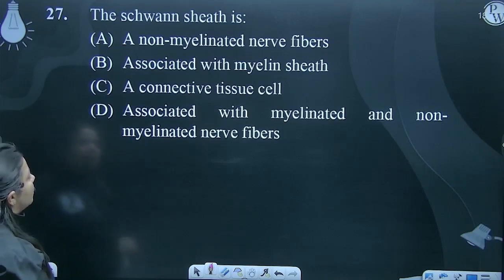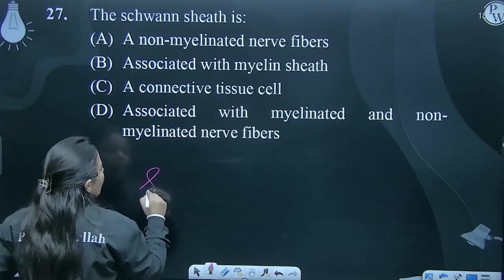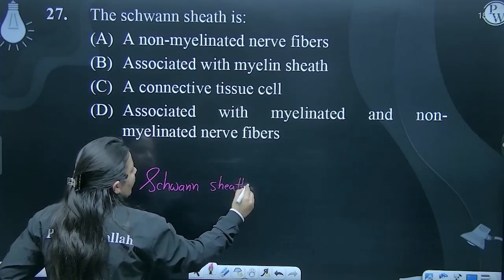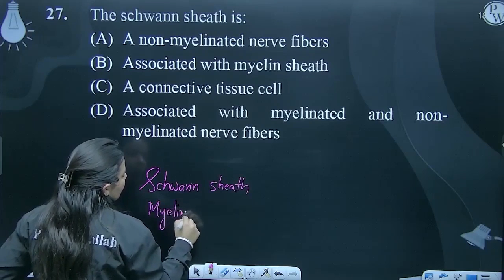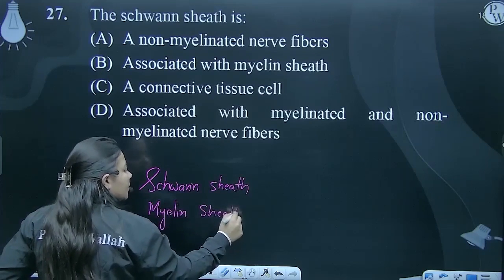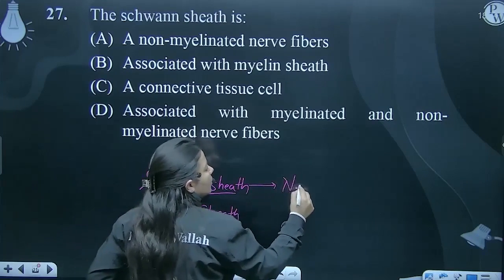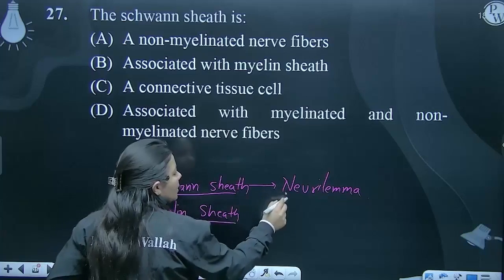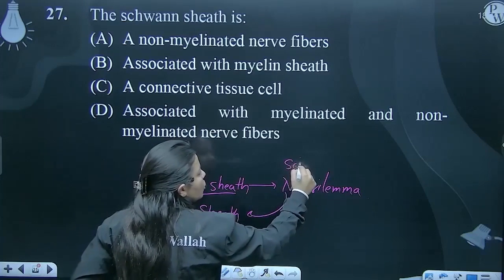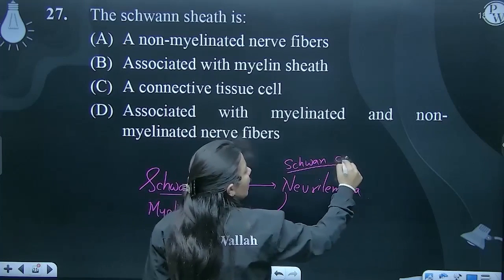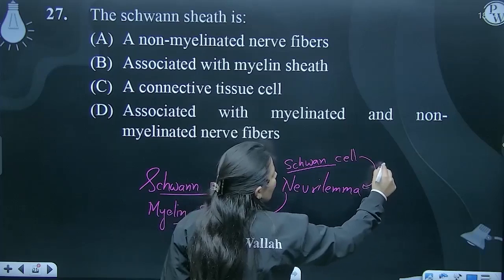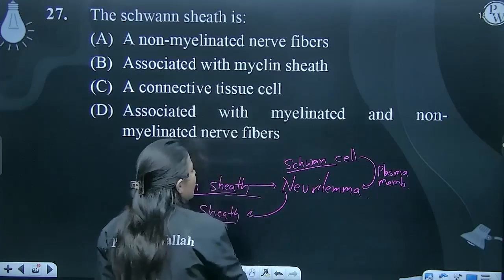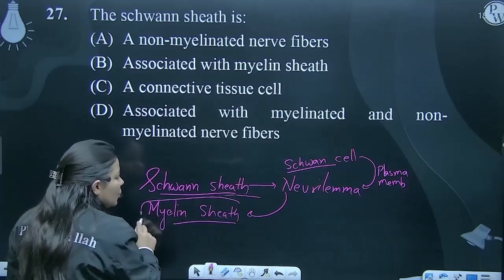The Schwann sheath is — first of all, a small concept: Schwann sheath and myelin sheath. The Schwann sheath is basically Neuralemma. The Schwann cell's plasma membrane is called Neuralemma, and this is called Myelin Sheath.